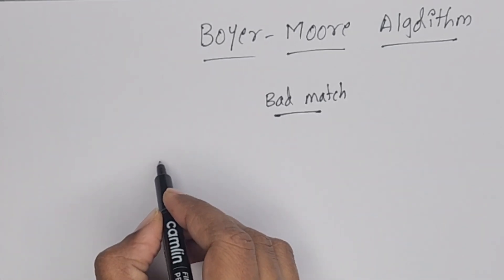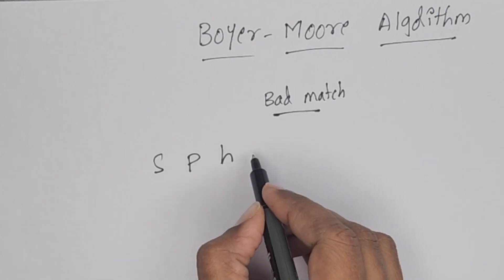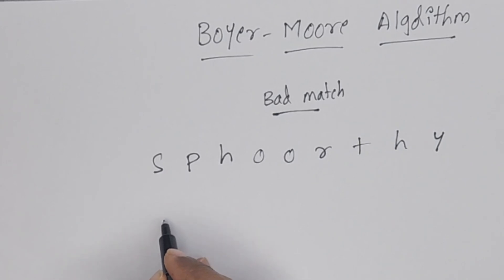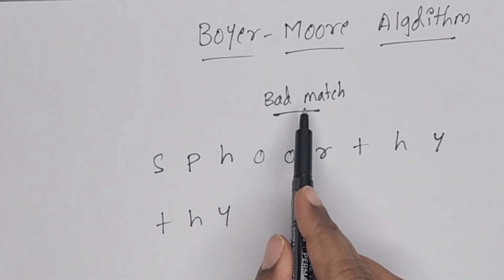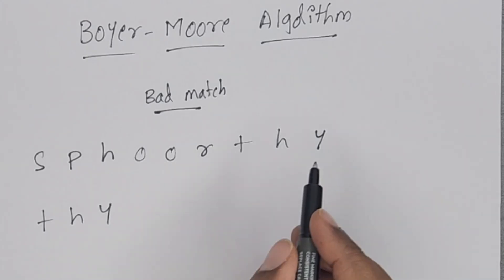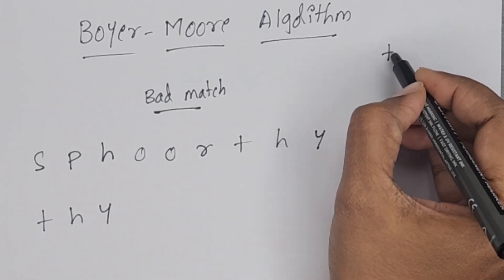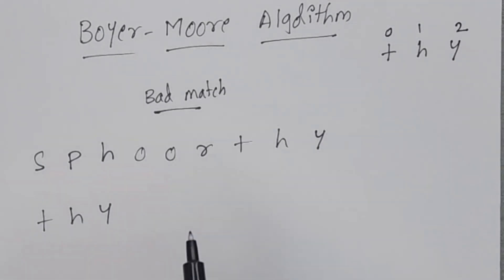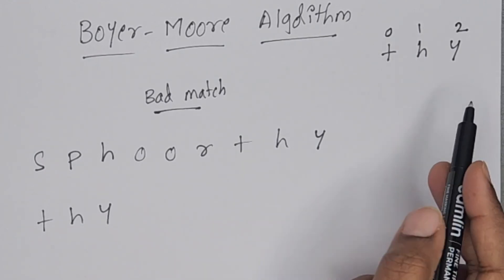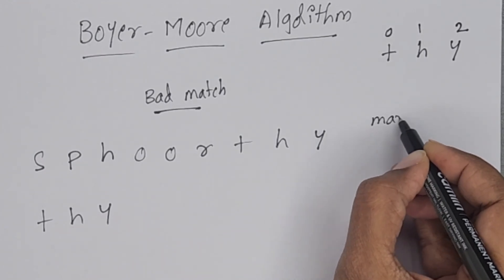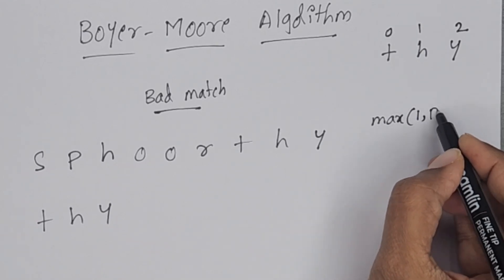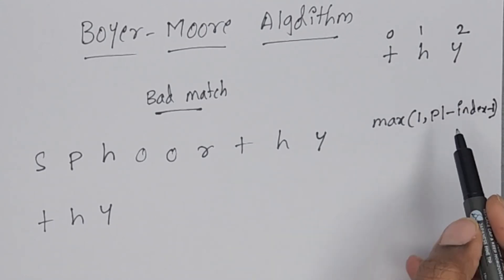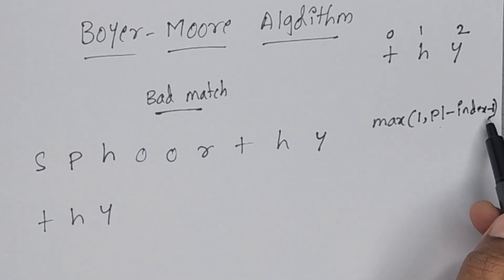We will take one example. The main string is 'SPHOORTHY' — S-P-H-O-O-R-T-H-Y — and the pattern is 'THY'. For this pattern, we have to create a bad match table. The index starts from 0, 1, 2. For every character, we have to assign one value using the formula: maximum of (1, pattern_length minus index minus 1).